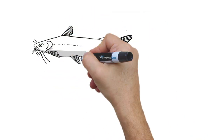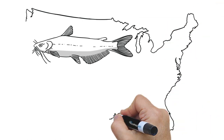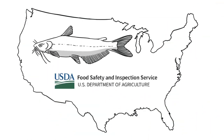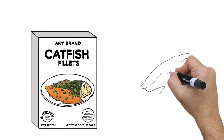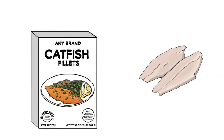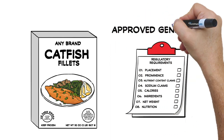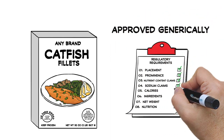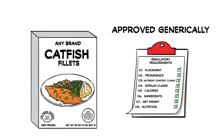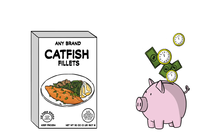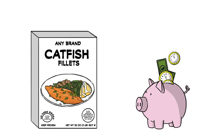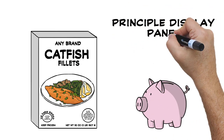All fish of the order Siluriformes sold in the United States, which includes catfish species, are regulated by the US Department of Agriculture, or USDA. If you are packaging catfish of any kind for sale, then your product label must have sketch or generic approval through the USDA. Most catfish labels can be approved generically, which simply means it meets all regulatory requirements — the label does not have to actually be submitted or approved. To save money and time, you want to make sure your label is in compliance. This video breaks down the 8 required features of the label, starting with the Principal Display Panel, or PDP.